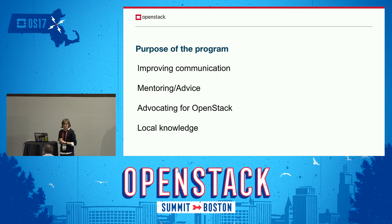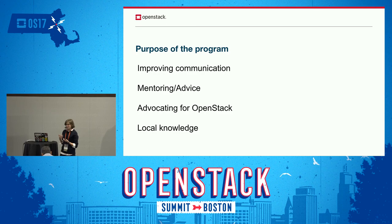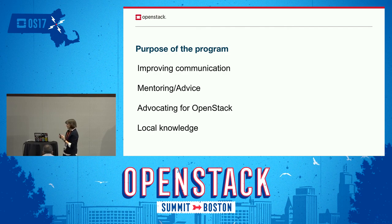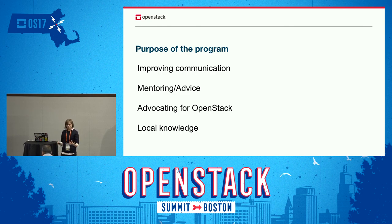The second point is mentoring and advice. Ambassadors are a great contact point for user groups — whether they need help getting a speaker, seeking sponsorship, or any number of things. If they need help running the user group or need advice, ambassadors are there to provide that. The third is advocating for OpenStack — they might attend events and spread the word about what OpenStack is and what it can do.